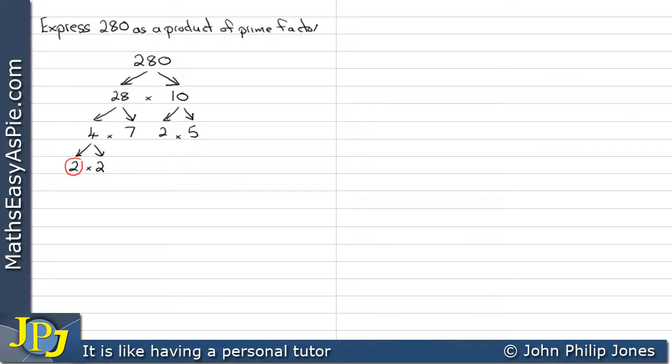Then, at the end of the branches, you can see I'm circling numbers. Now these happen to be prime numbers. So what we now do, we write them down, starting at the 2s, then the next 2. And of course, 5 comes next, so we write that one down. And then finally, we write the 7 down. You can see we're multiplying them all together. And when you do that, you'll find out you get 280. So those numbers there are prime numbers.